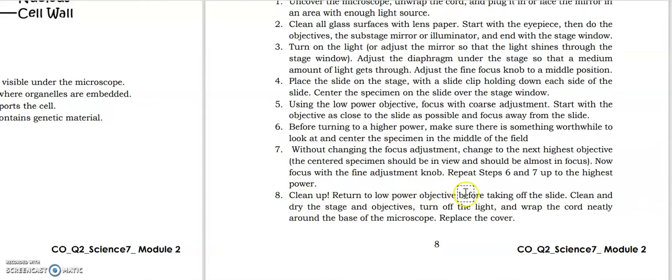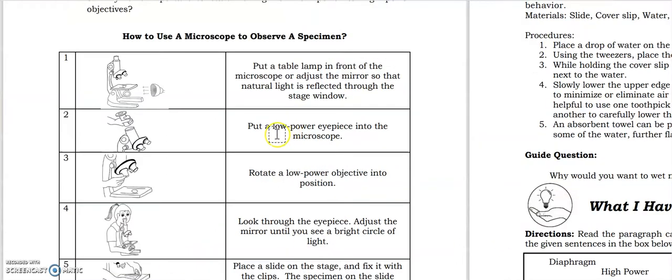Then eighth step is to clean up. Return to low power objective before taking off the slide. Clean and dry the stage and objectives, turn off the light, and wrap the cord neatly around the base of the microscope and replace the cover. Then we have here the illustrations and how to use a microscope to observe a specimen.